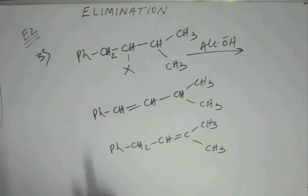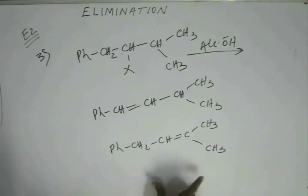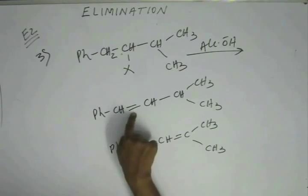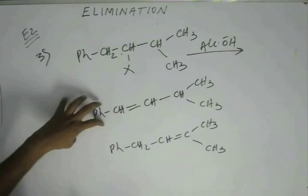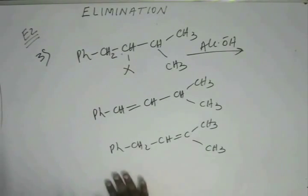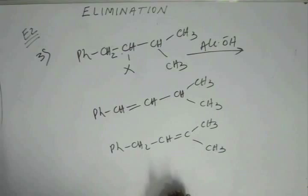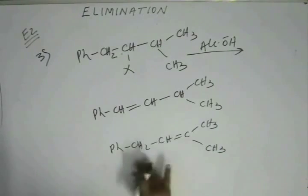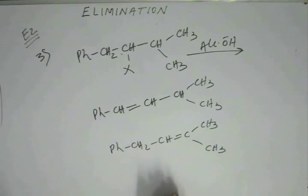Counting alpha hydrogens for the more substituted alkene: three plus three plus two gives eight alpha hydrogens. For the less substituted alkene: phenyl does not give any alpha hydrogens, so there is only one alpha hydrogen — a total of one versus eight. Extending the same logic as the previous problem, the product with eight alpha hydrogens seems to be more stable, which would tempt us to declare it as the major product.